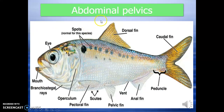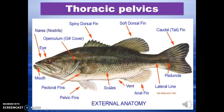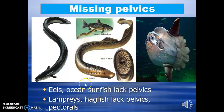Here you can see abdominal pelvics — in some fishes, the pelvic fin is located in the abdominal region, near the anal fin. Next is thoracic pelvics, where the pelvic fin is located in the thoracic region, almost near the pectoral fins. So in the previous case the pelvic fin was in the abdominal region, whereas here the pelvic fins are in the thoracic position.